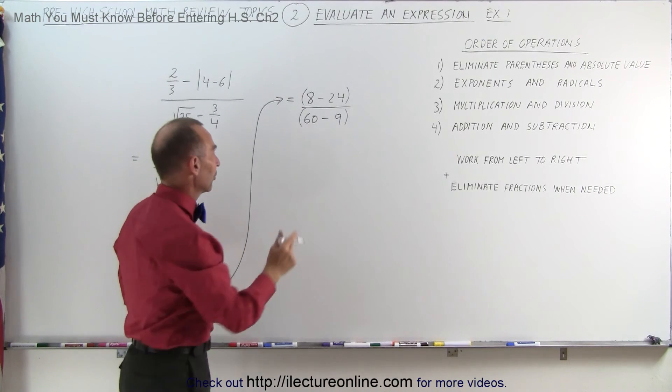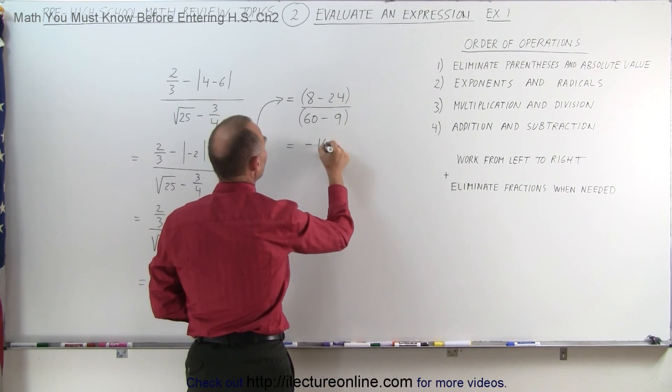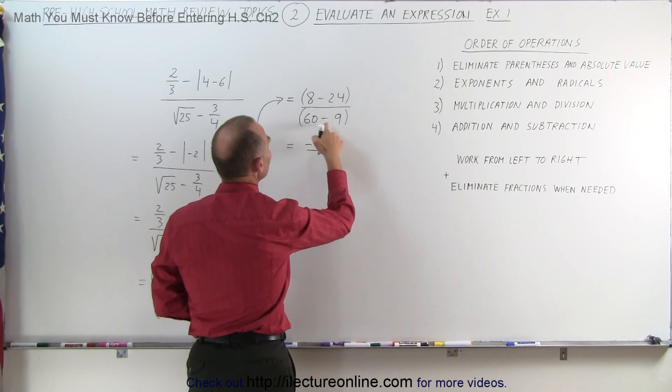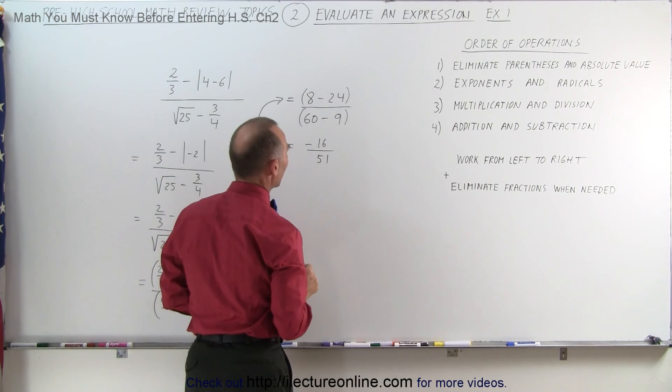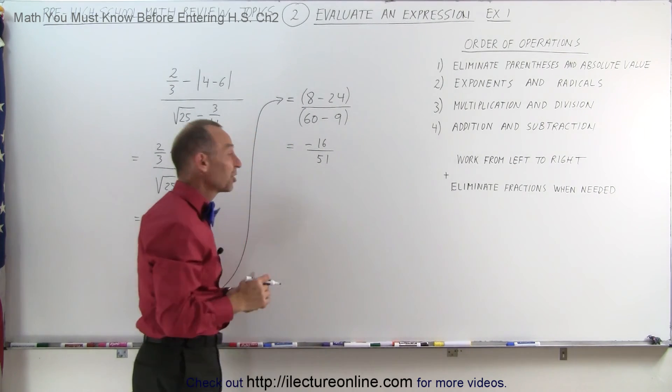So this becomes 8 minus 24, which is -16, divided by 60 minus 9, which is a positive 51.